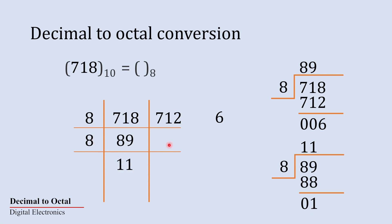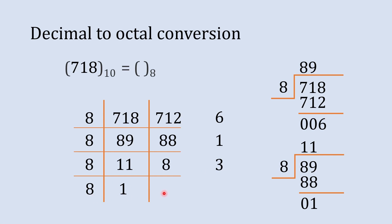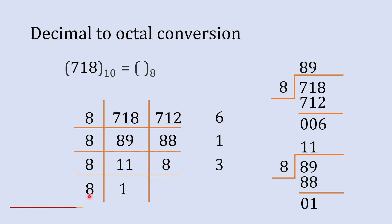Again divide 11 by 8. 8 ones are 8 and the difference is 3. Now if you try to divide 1 by 8, you cannot further divide, so when you reach a point where you can no longer divide by 8, you stop.